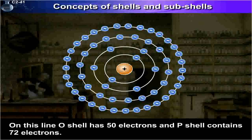On this line, the O shell has 50 electrons, and the P shell contains 72 electrons.